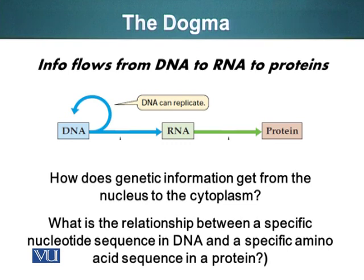This dogma raised two serious questions. In eukaryotes, we know the DNA is in the nucleus, whereas proteins are synthesized in the cytoplasm. So how is it that the genetic information is moved from DNA, which is present in the nucleus, to RNA? We know DNA doesn't physically move to the cytoplasm itself.